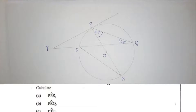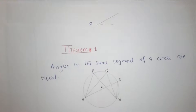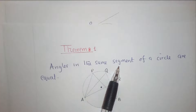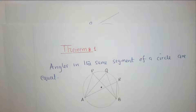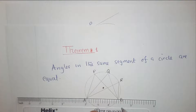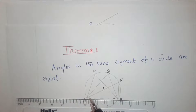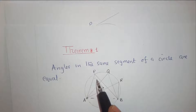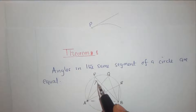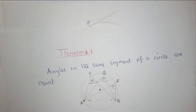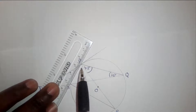To calculate this angle, there is a property we need to use — Theorem 1: angles in the same segment of a circle are equal. What we mean by the same segment is that all angles starting from the same chord in the same segment are equal. If one angle is X, even the others will be X, so all these angles are equal because they are coming from the same segment. This is the property we need to use.